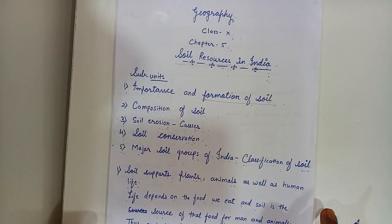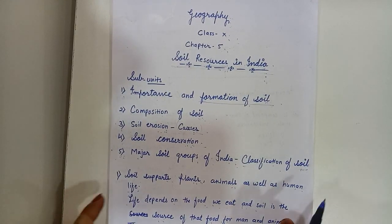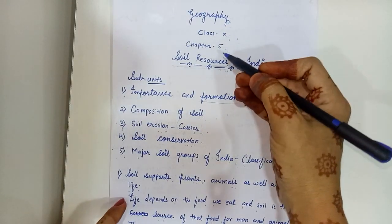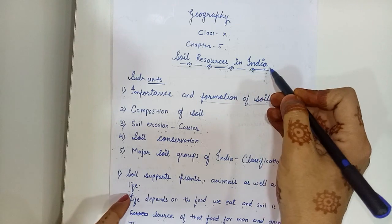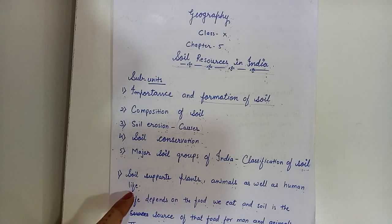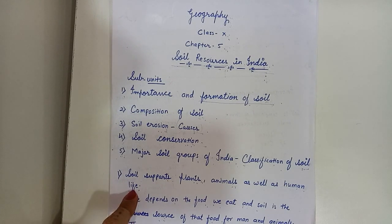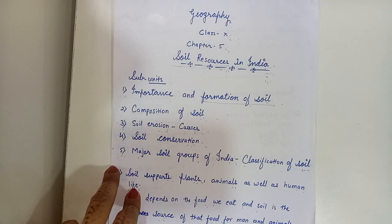Good morning children. Today we will start with a geography subject of class 10th with chapter number 5, Soil Resources in India. Soil resources are a form of environmental asset providing a range of ecosystem services. In this chapter we will discuss five sub-units of soil resources.